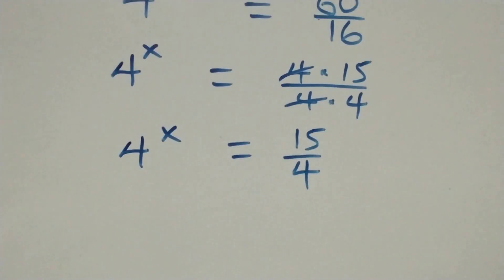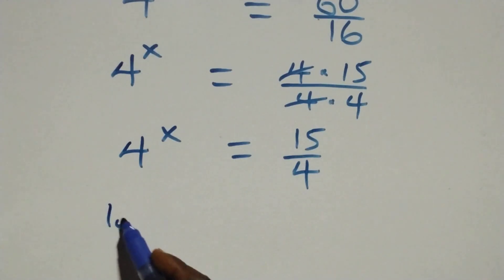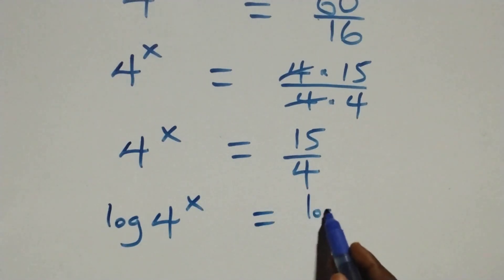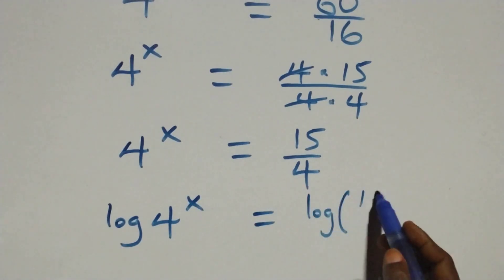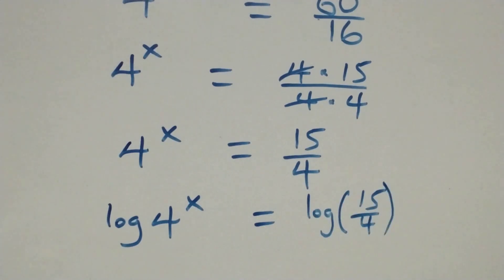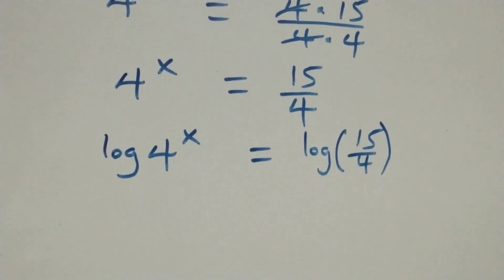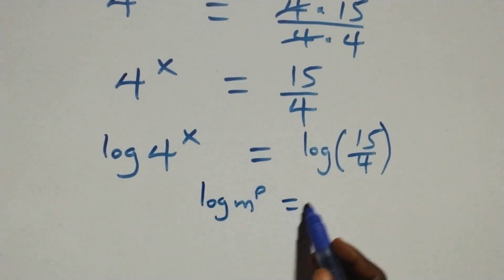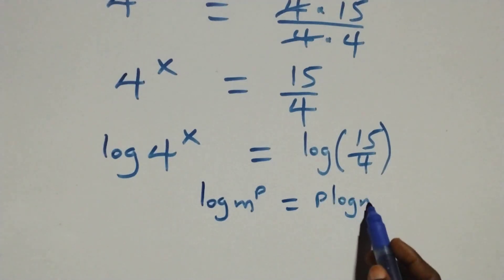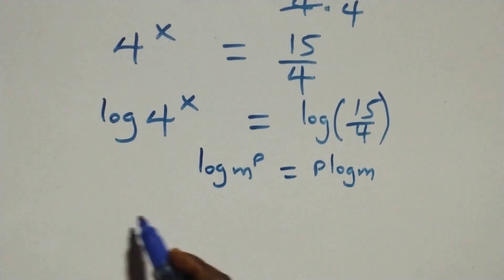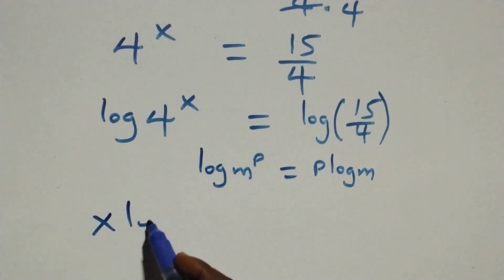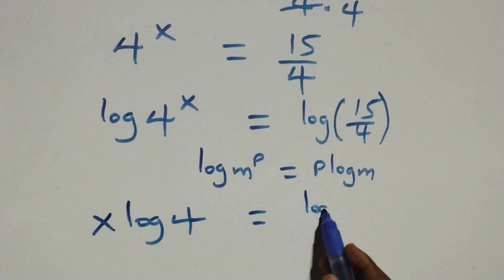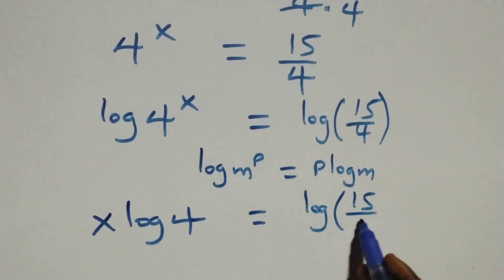The next step: we take the log on both sides. We have log of 4 raised to power x equals log of 15 over 4. This gives us x times log 4 equals log of 15 over 4.